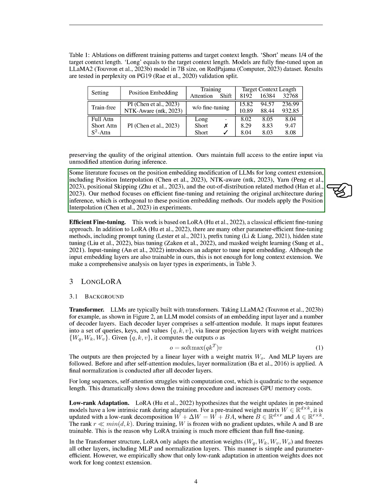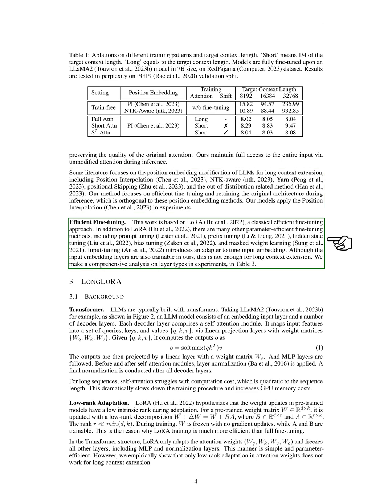There are other methods that focus on modifying the position embedding of LLMs for long context extension, including position interpolation, NTK-aware, YaRN, positional skipping, and out-of-distribution-related methods. Our method focuses on efficient fine-tuning and retaining the original architecture during inference. Our work is based on LoRA, a classic efficient fine-tuning approach. There are many other parameter-efficient fine-tuning methods, including prompt tuning, prefix tuning, hidden-state tuning, bias tuning, and masked weight learning.